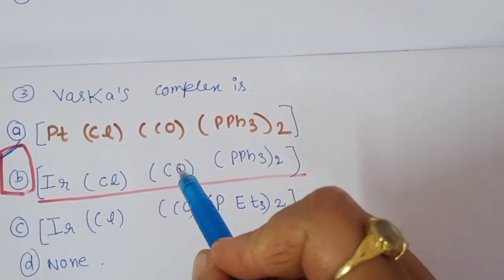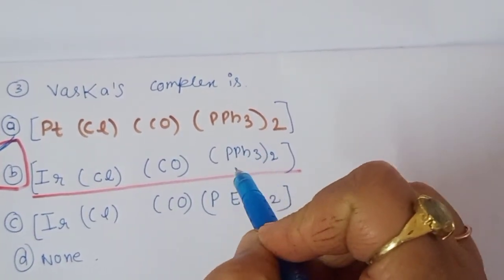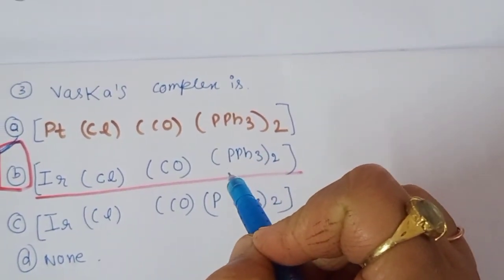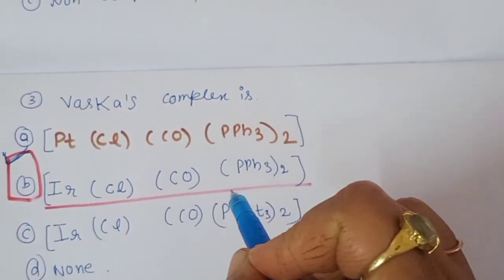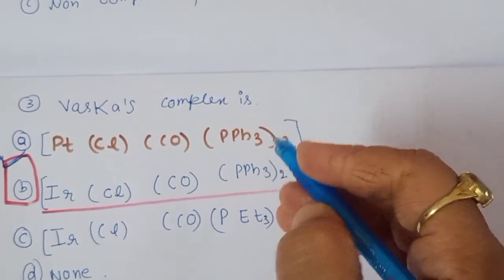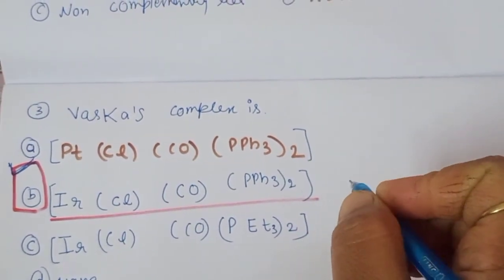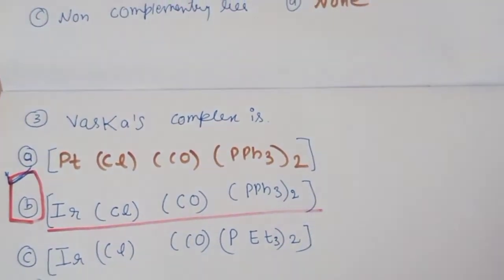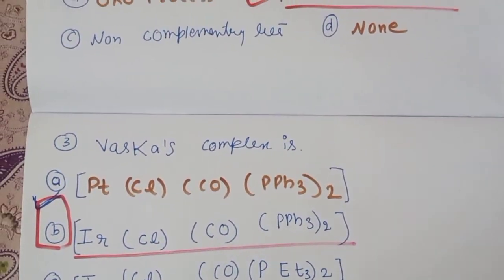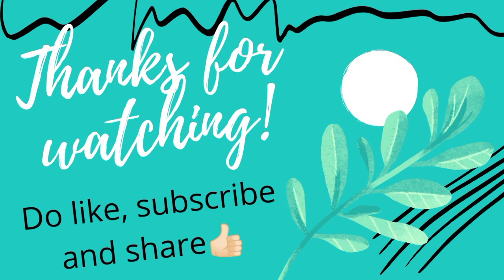Vaska's complex is a square planar iridium complex. It is diamagnetic in nature and the two PPh3 ligands are trans to each other.